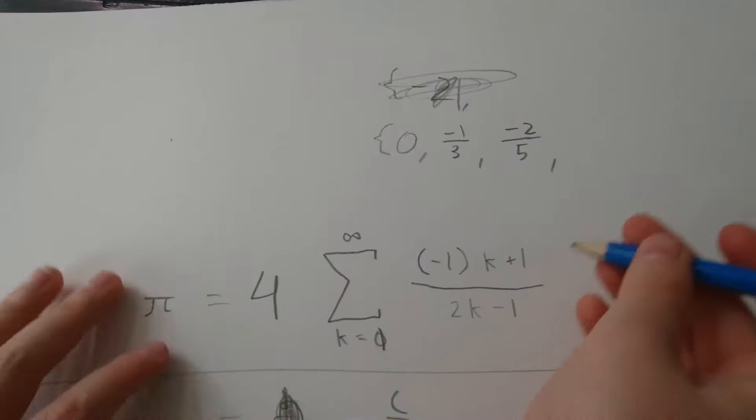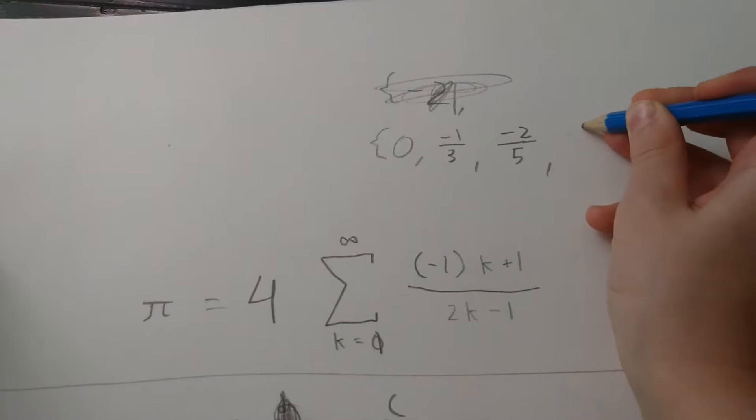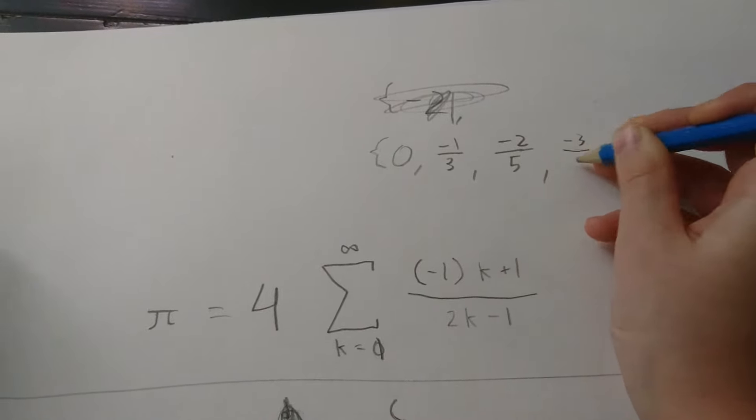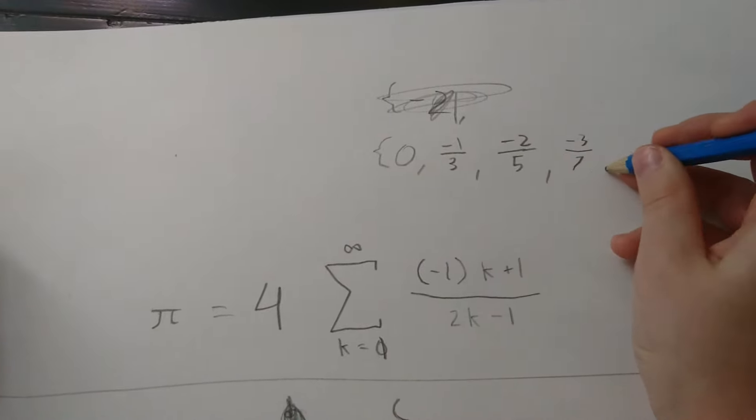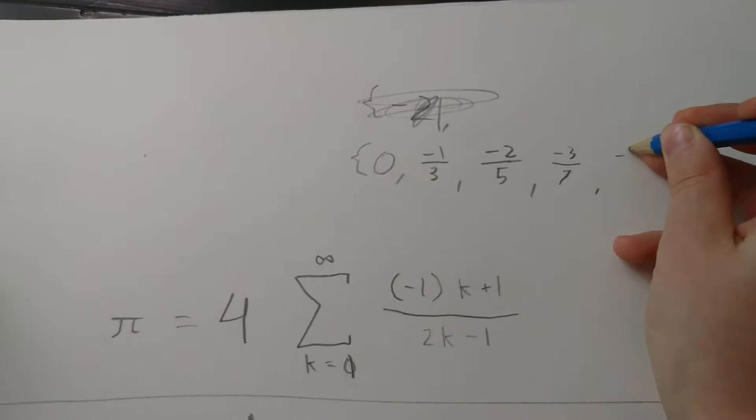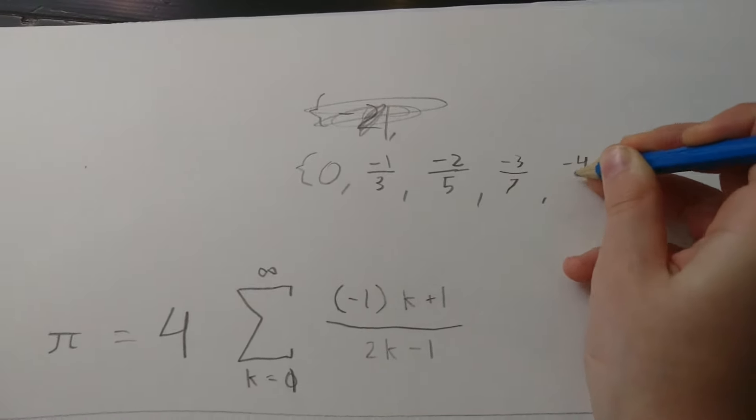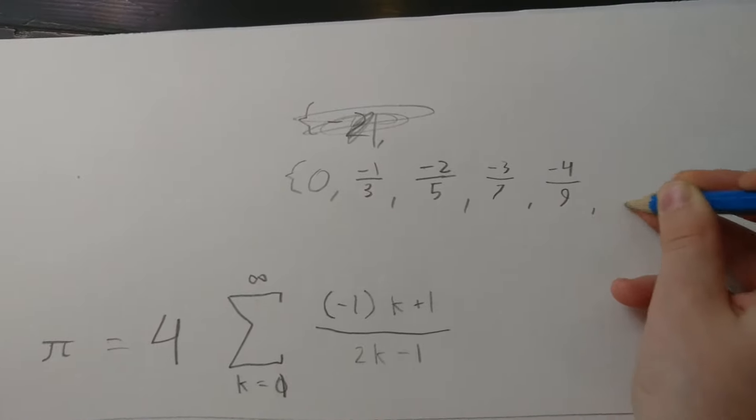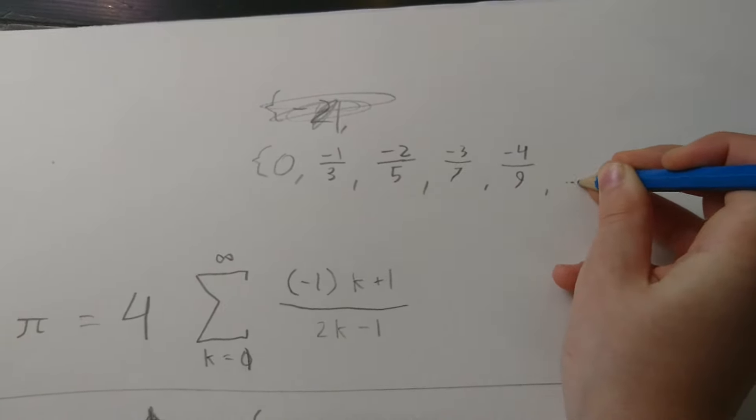Then I can say to you it's negative three-sevenths, then negative four-ninths, and you know, this goes on forever. And what does that mean?